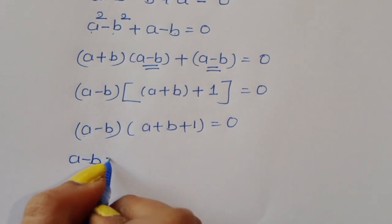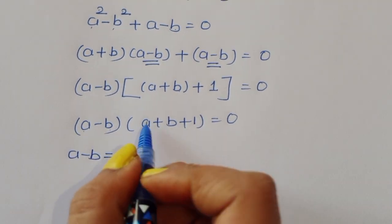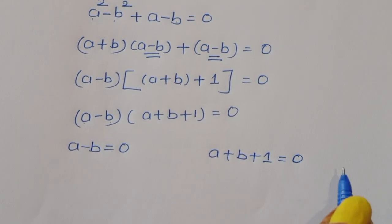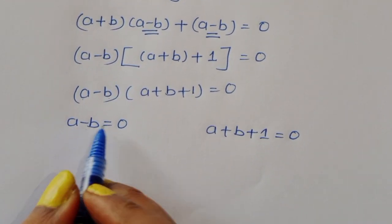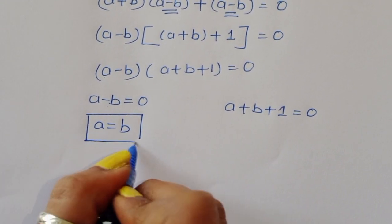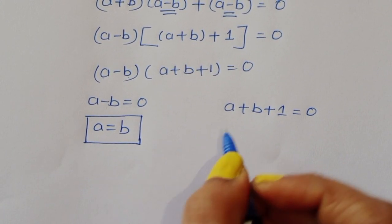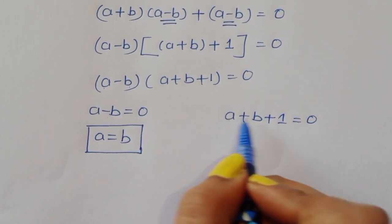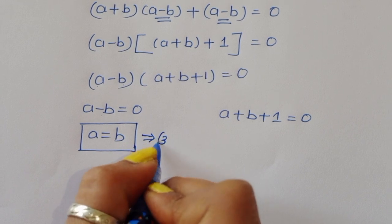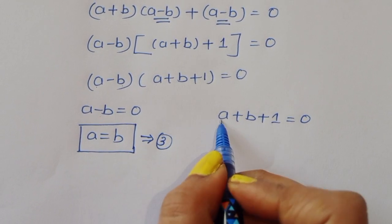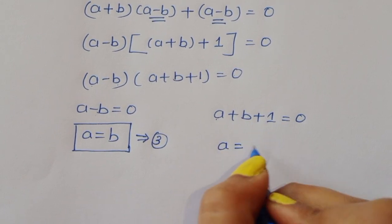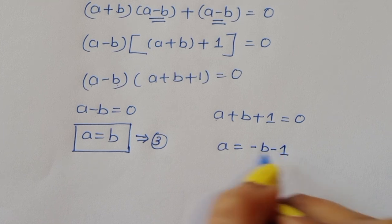From the first factor, a minus b equals 0, so a equals b. This is equation 3. From the second factor, a plus b plus 1 equals 0, so a equals minus b minus 1. This is equation 4.